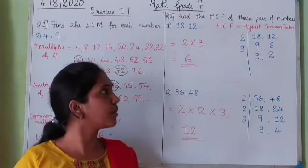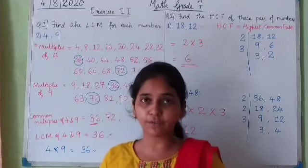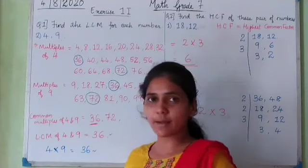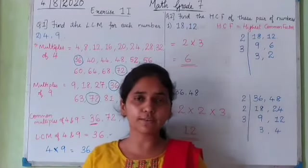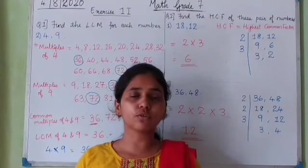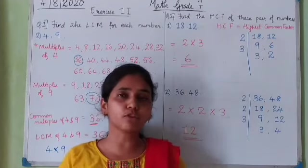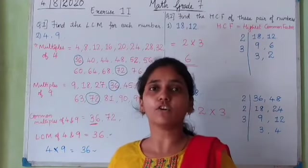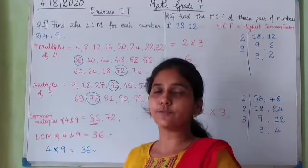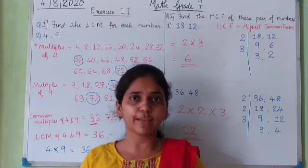In this way we find the lowest common multiple and the highest common factor of given numbers. I hope you have understood. There are more examples in the notes, and once you practice the homework sums, you will get a better idea of how to find the HCF and LCM. That is it for today — we will meet in the next class. Take care, goodbye.